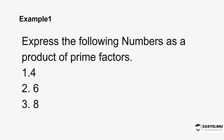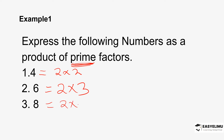So we want to look at the first example: express the following numbers as a product of prime factors. Note that we are restricted to prime factors only — we can't use 1. So 4 is going to be 2 times 2. The next one is going to be 2 times 3. And 8 is going to be 2 times 2 times 2. The prime factor for the first is 2 only, the second has prime factors 2 and 3.